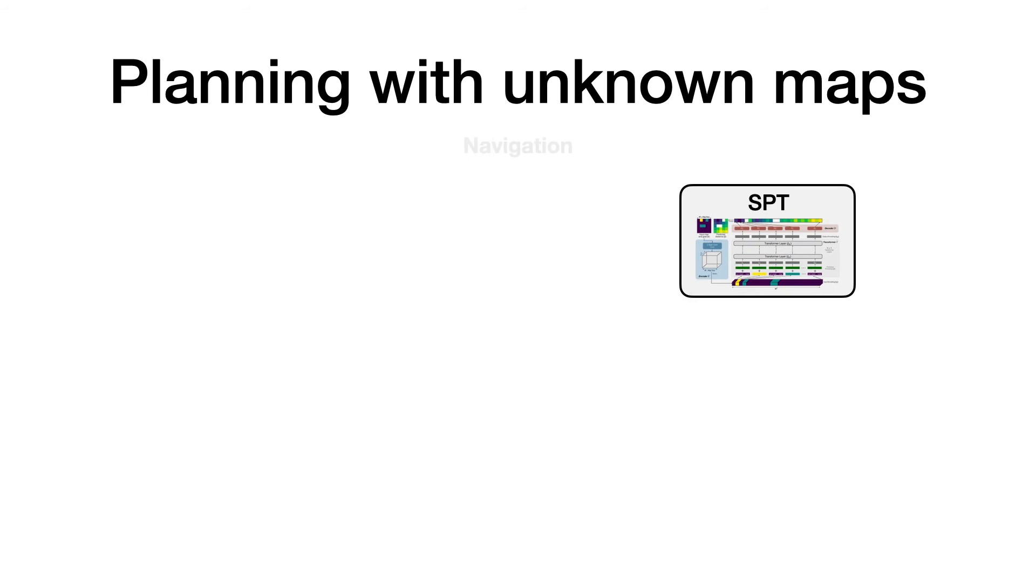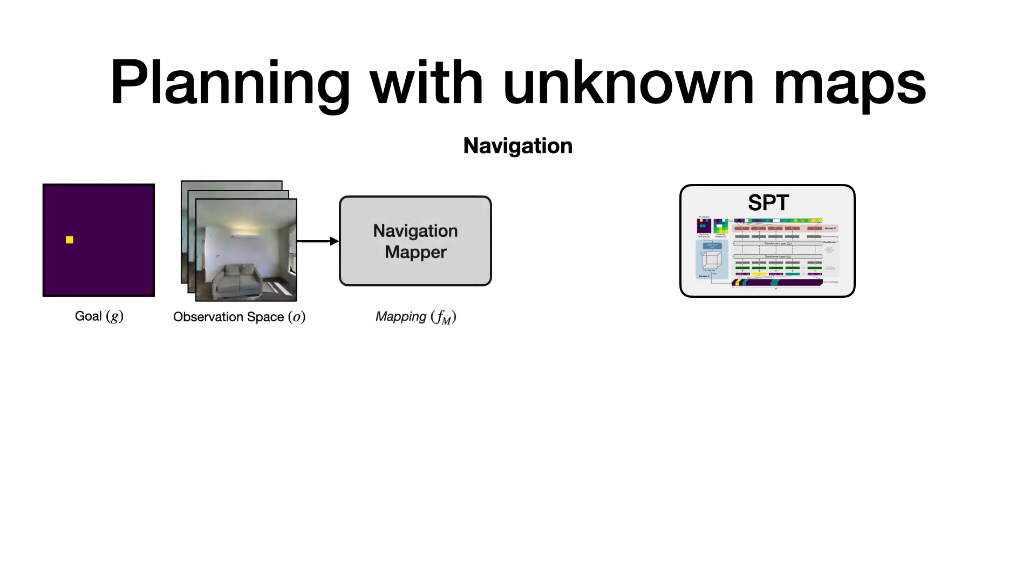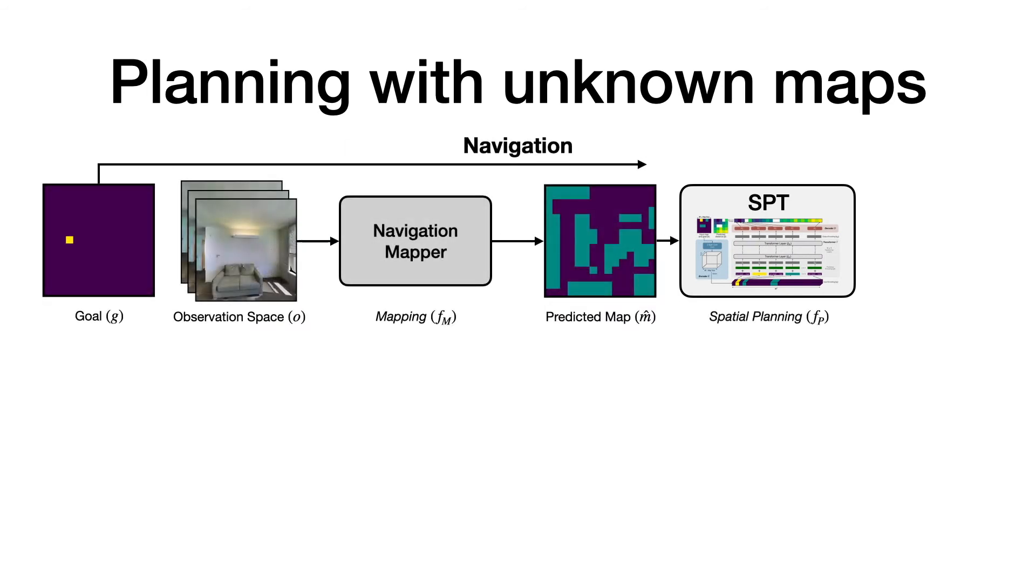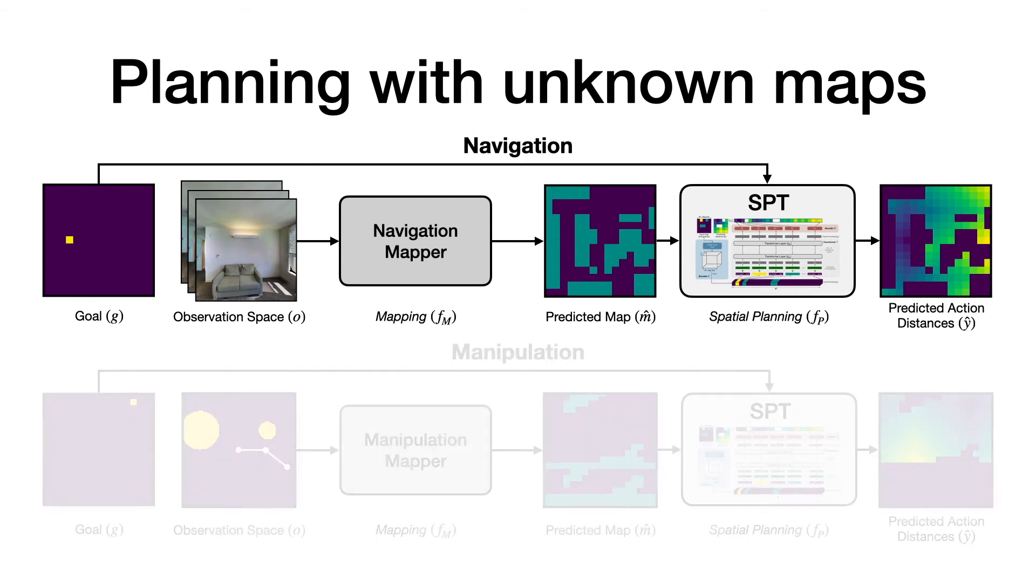We then use the SPT model trained on the synthetic data for the second setting of planning with unknown maps. In this setting, we pass the raw sensor observations through a mapping model and pass the predicted map through the pre-trained and frozen SPT model to predict the action distances.